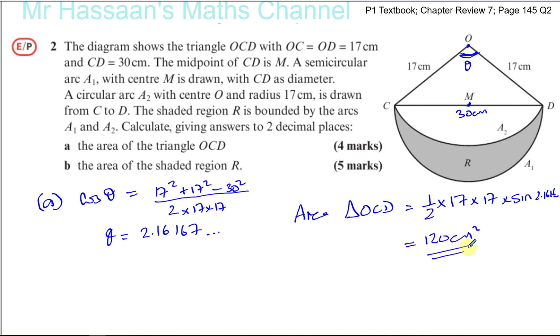As I said, we could have found it by using Pythagoras as well. We could have dropped a perpendicular down from here, that would have been 15 and 17. We could have found that. And then we could have used a half times base times height. Half times 30 times that height we found, and we would have got the same answer.